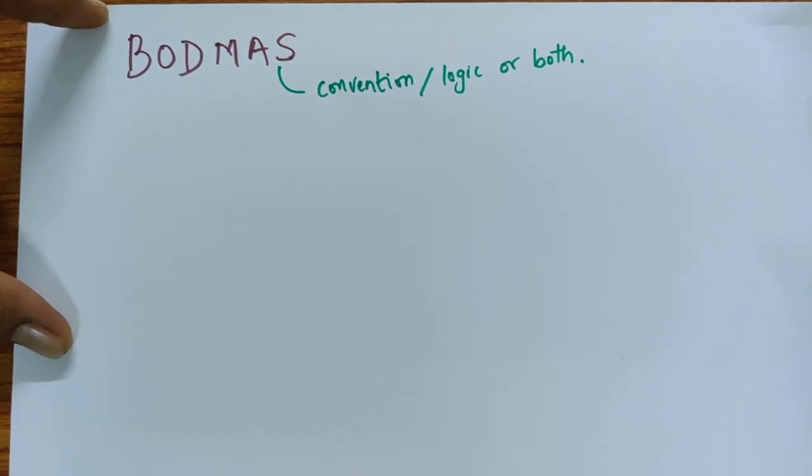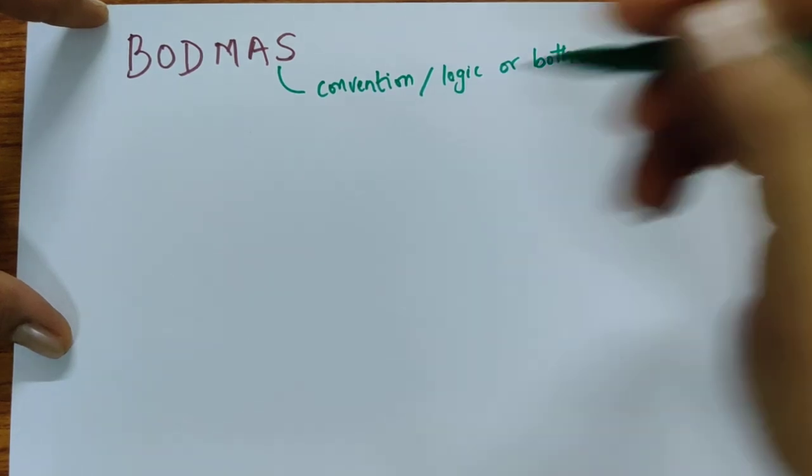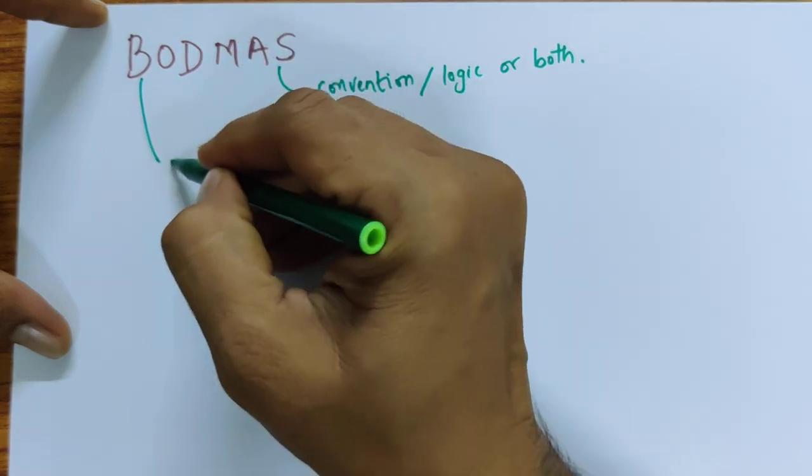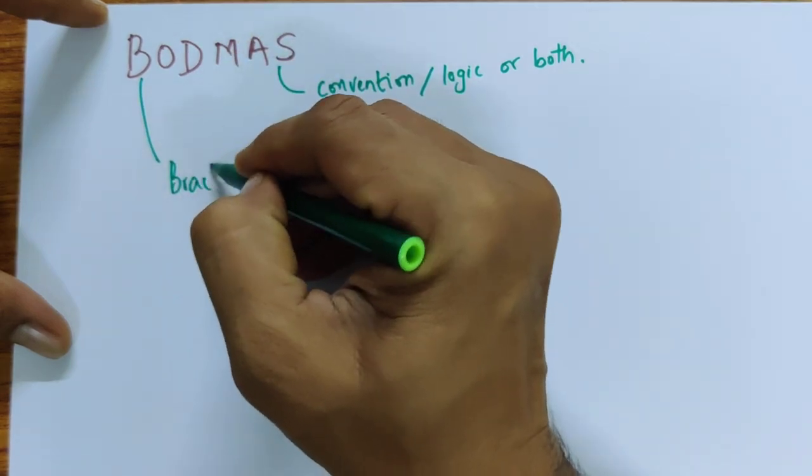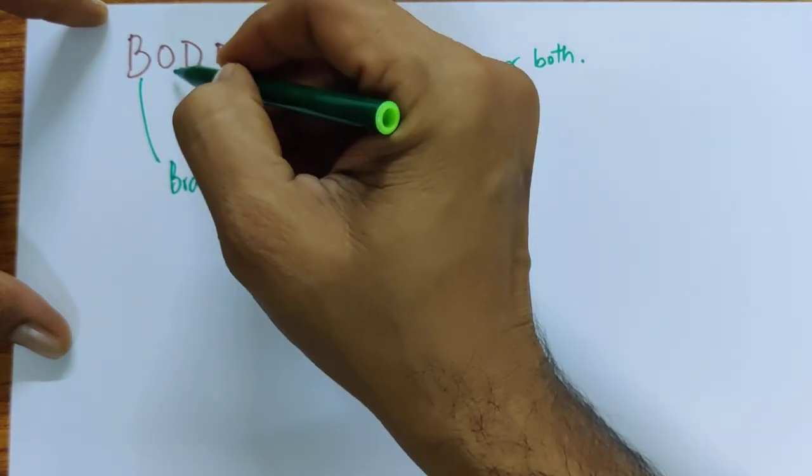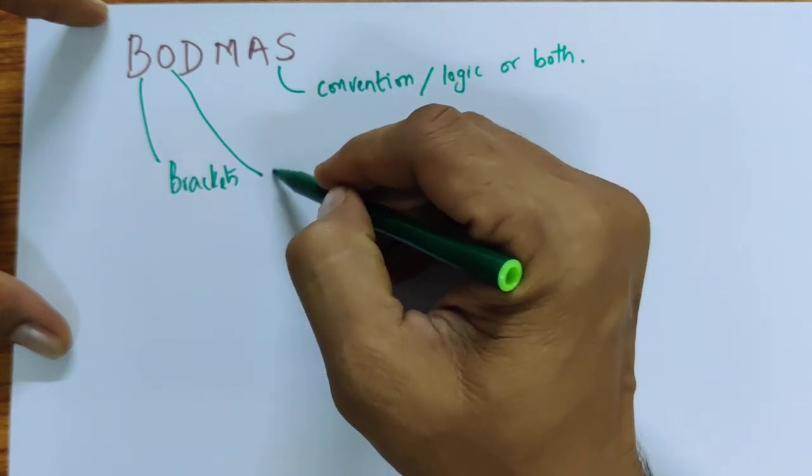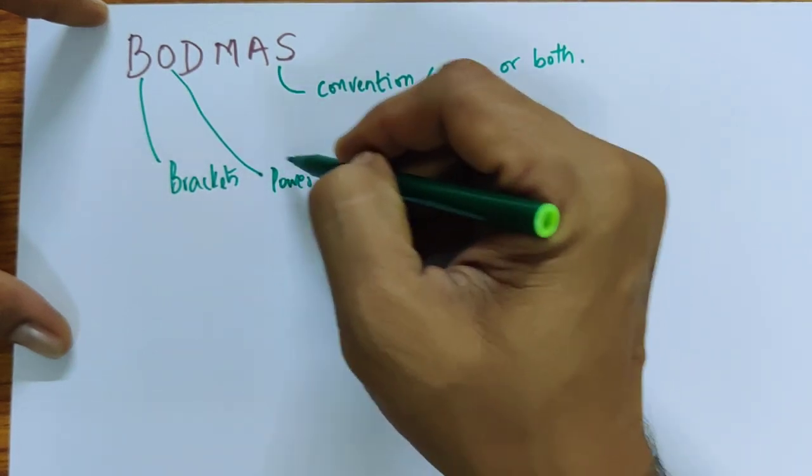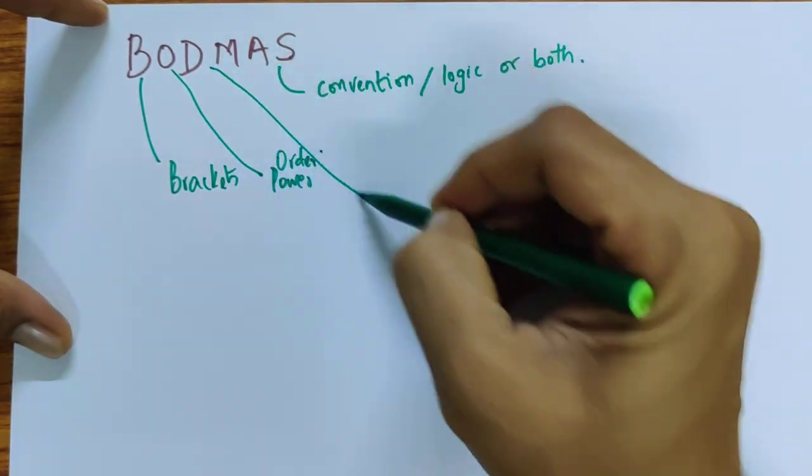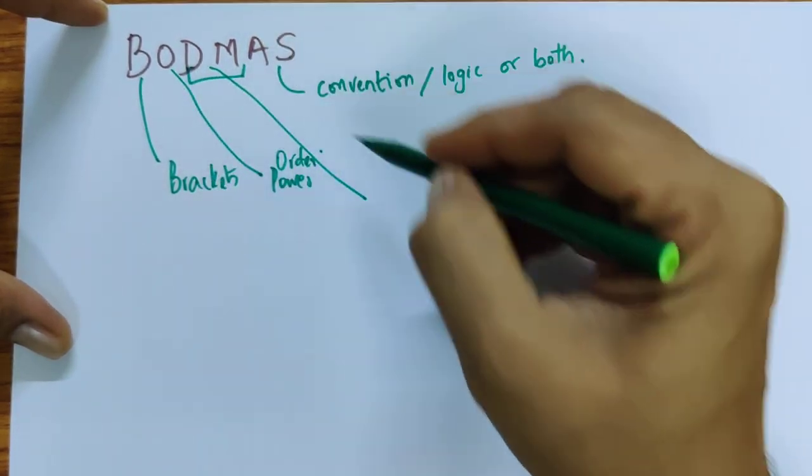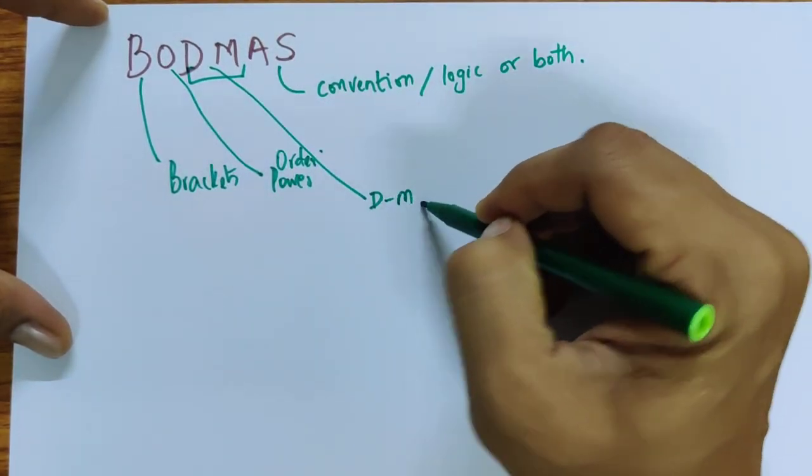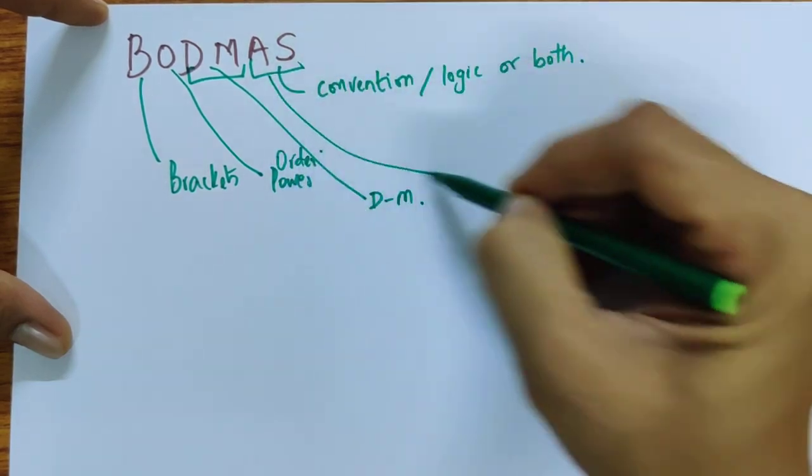Okay, in this video we will look at BODMAS which is bracket, order means power or order, then division multiplication, then addition subtraction.